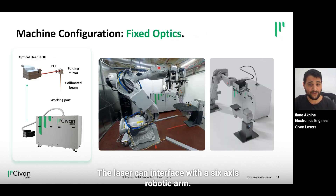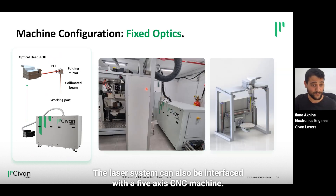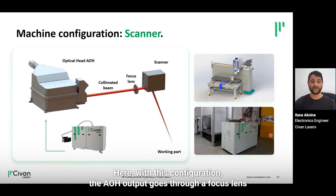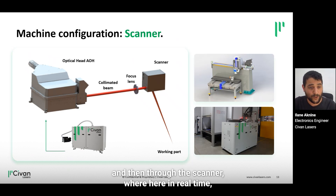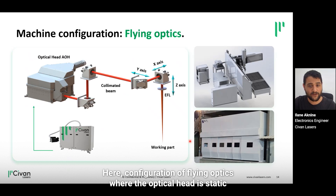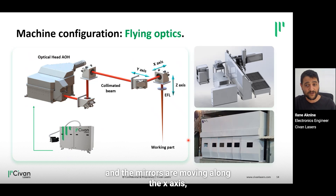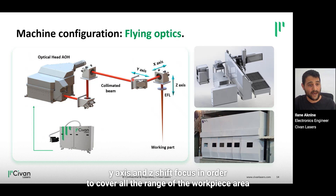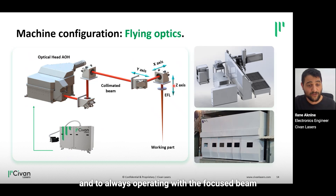With fixed optics, the laser can interface with a six-axis robotic arm. The laser system can also be interfaced with a five-axis CNC machine. In this configuration, the AOH output goes through a focus lens and then through the scanner, where in real time the scanner will be the master and will control the dynamic beam. In a flying optics configuration, the optical head is static and the mirrors move along the X-axis, Y-axis, and Z-shift focus, in order to cover the full range of the workpiece area and to always operate with a focused beam.